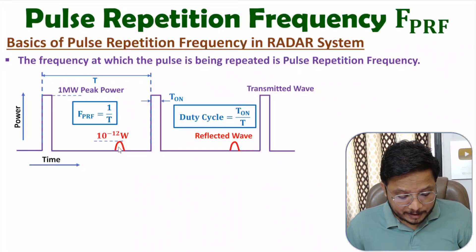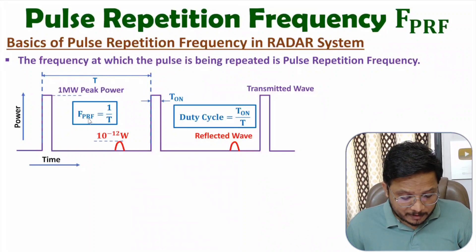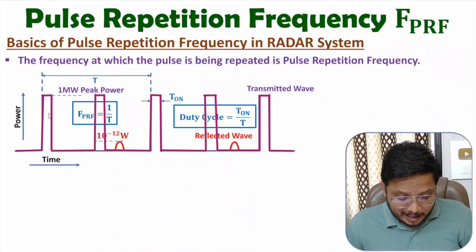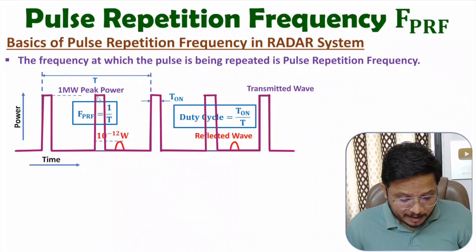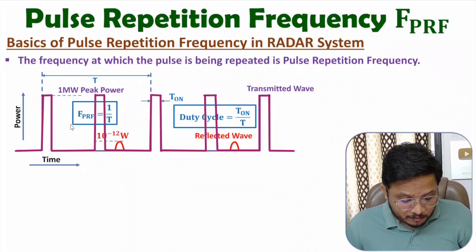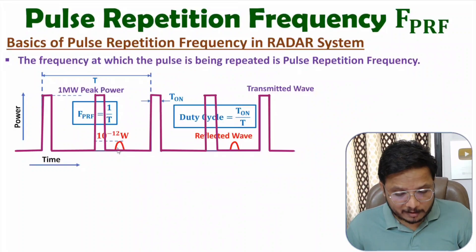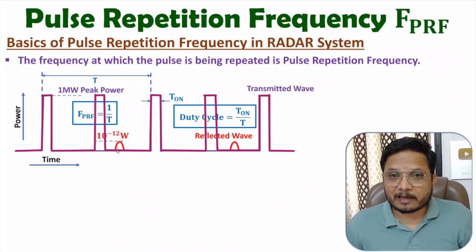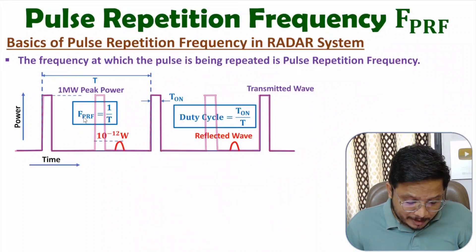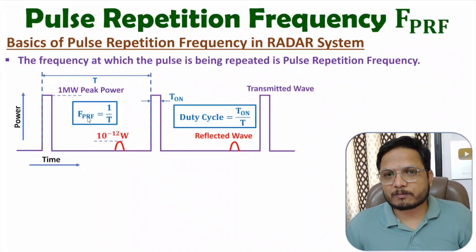If you select a higher value of pulse repetition frequency, there is a possibility of ambiguities. For example, if the frequency is double, there will be a second pulse appearing earlier. After transmission of the second pulse, we might be receiving an echo based on the first pulse, so there is a possibility of ambiguity in detection of the target. We should select a lower value of pulse repetition frequency based on the expected range.